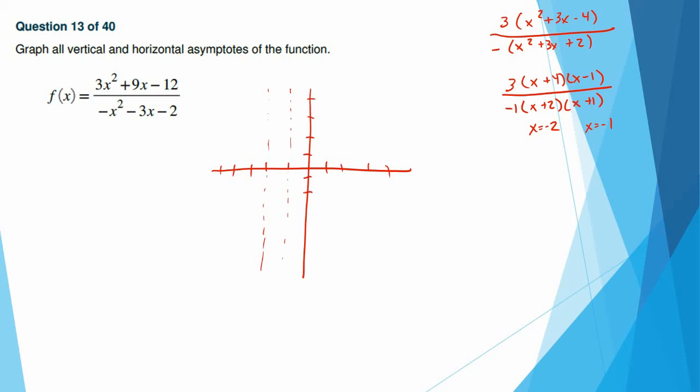Now, to find horizontal asymptotes, we go back to the original problem and we compare those degrees. So this is second degree and this is second degree. If they have the same degree, then we only look at this. 3 divided by negative 1 is negative 3. Y equals negative 3 is going to give me my asymptote. Now, what happens if the top is bigger? If the top is bigger, no asymptote. If the bottom is bigger, then the x-axis, y equals 0, will be the asymptote.